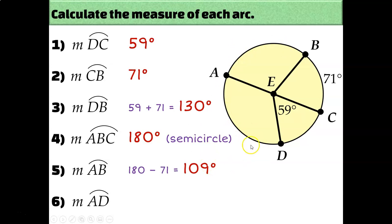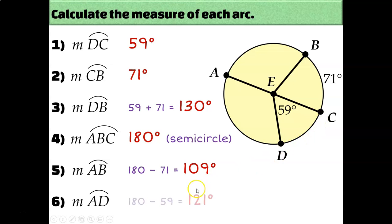Similarly, to find the measure of arc AD: arc ADC is a semicircle, so it adds up to 180 degrees. Part of it is 59 degrees, so the other part — arc AD — must be 121 degrees.